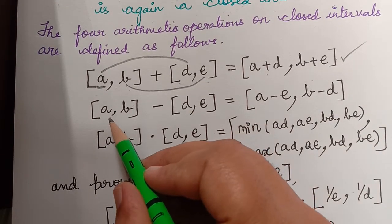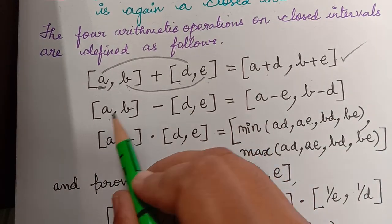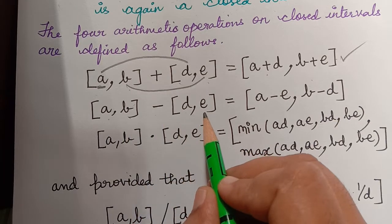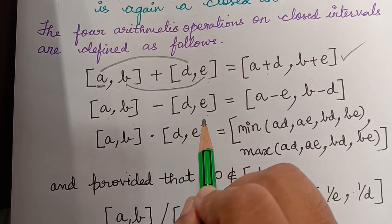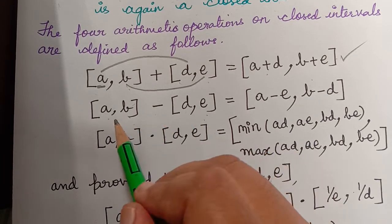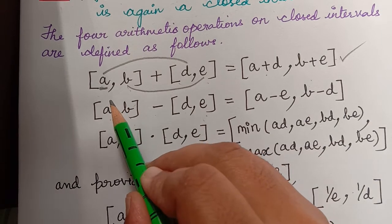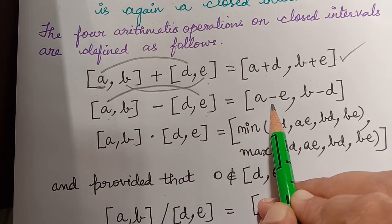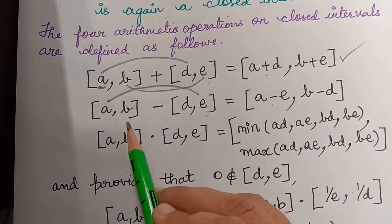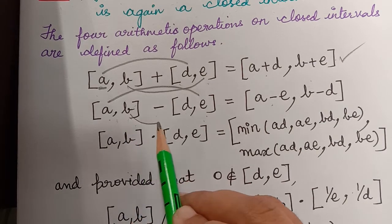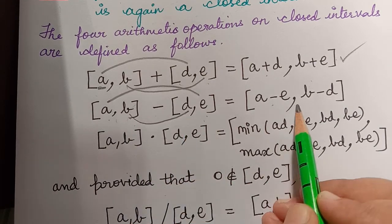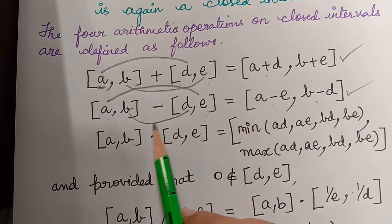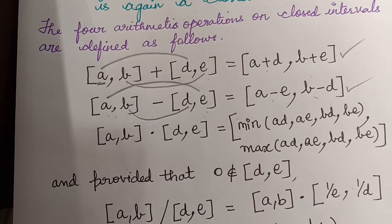For subtraction: closed interval [a, b] minus closed interval [d, e]. This is done as [a minus e, b minus d]. This is the star operation with respect to subtraction.